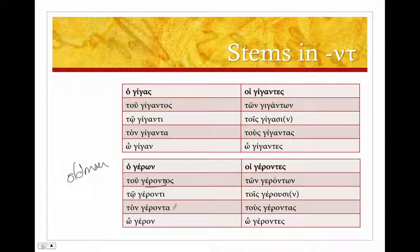To geronti, ton geronta, perfectly normal in the singular. And our vocative singular is the stem without the tau. So, just like o gigan, here we have o geron. This is only the case in stems that end in nu tau.